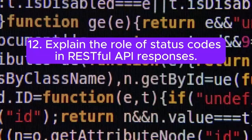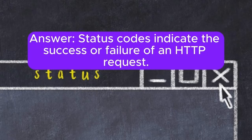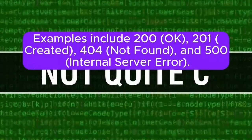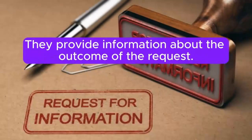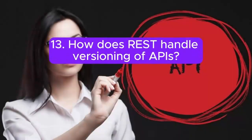Question 12: Explain the role of status codes in RESTful API responses. Status codes indicate the success or failure of an HTTP request. Examples include 200 OK, 201 Created, 404 Not Found, and 500 Internal Server Error. They provide information about the outcome of the request.